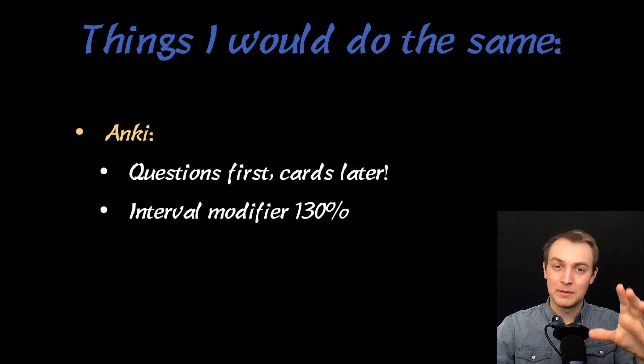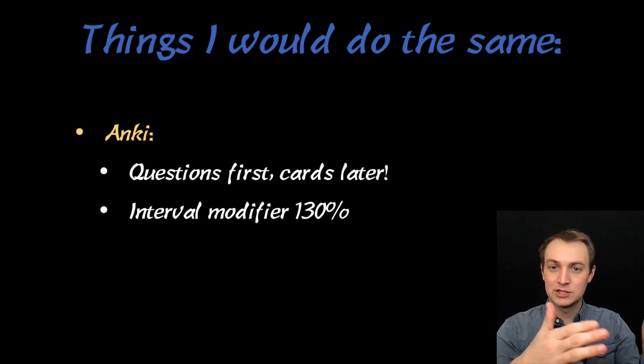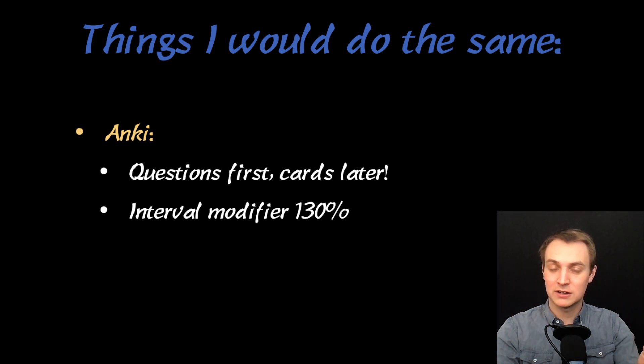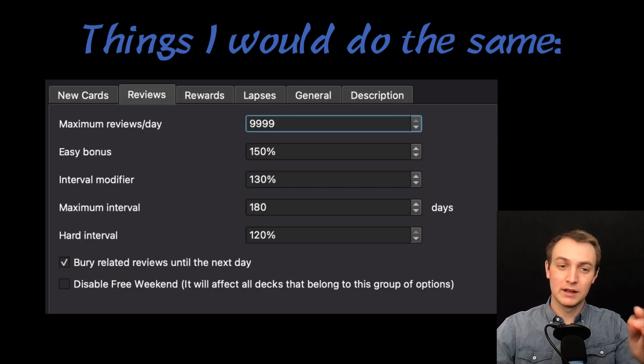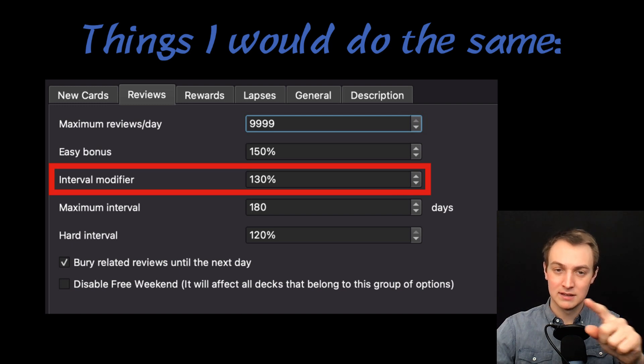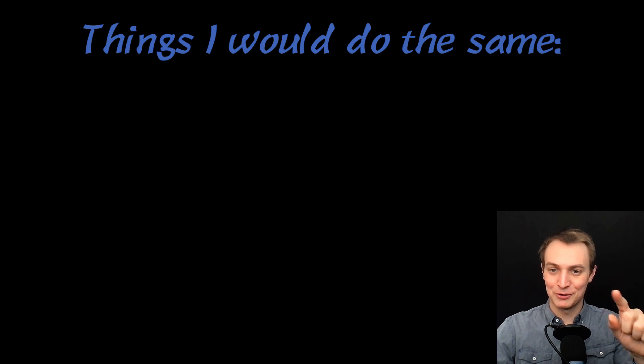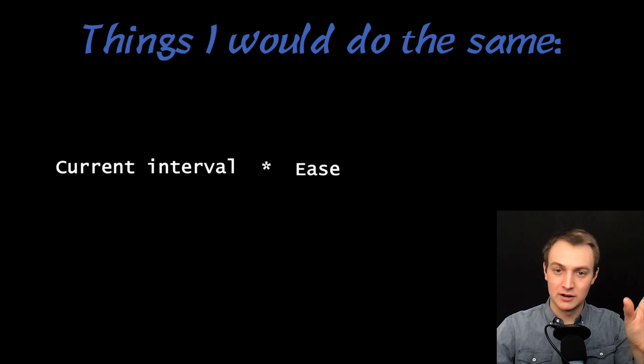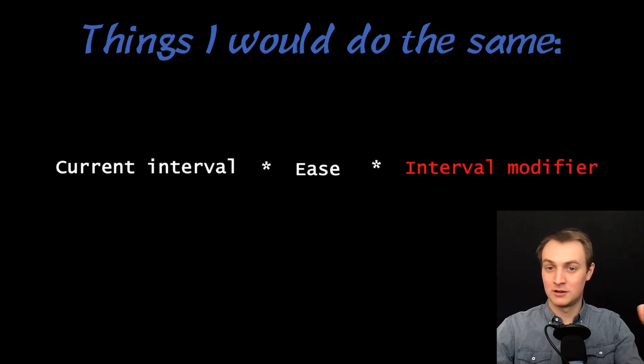I talked about this in my pediatric rotation video, but I decided to change my interval modifier to 130%. I feel like this has been helpful because I have so many rotations building up and I wanted to keep my flashcards in there for step two. Here's where it is in the settings - it's this interval modifier thing. Every time you do a flashcard, it takes the current interval times the ease times the interval modifier, which is by default 100%. When you add that in, it increases everything and decreases your load.